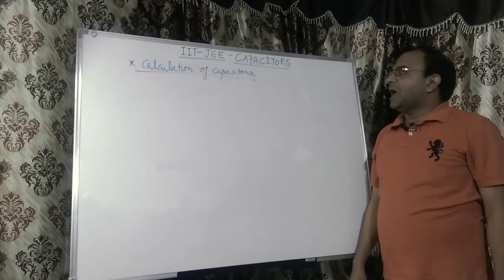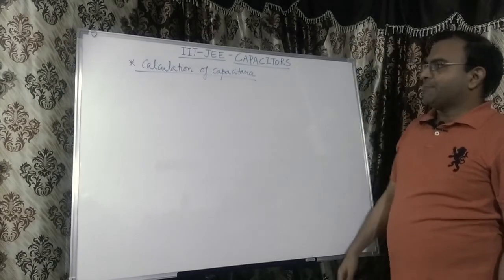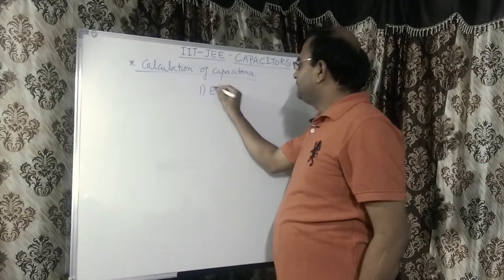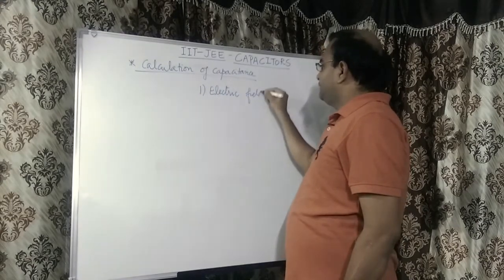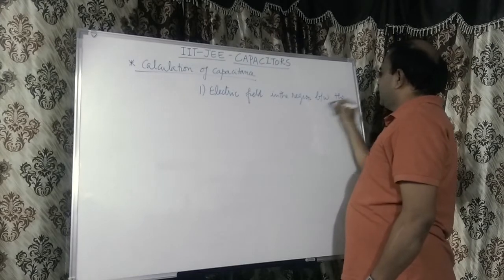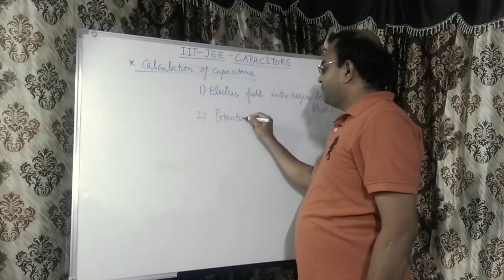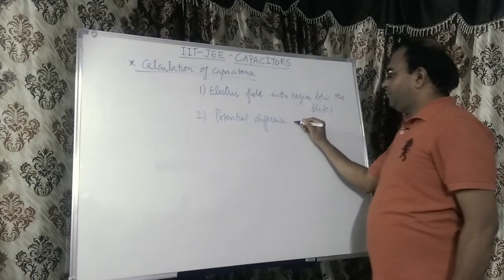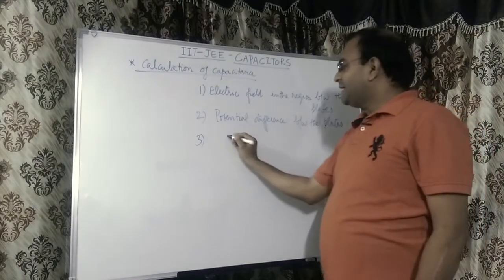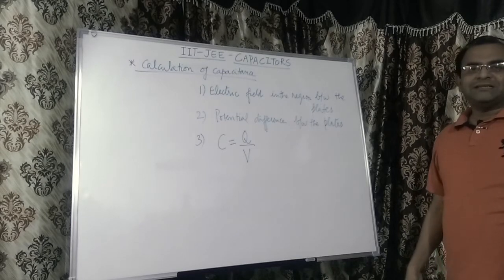The next topic is the calculation of capacitance. Here I will discuss a general procedure for calculating the capacitance of any given capacitor of arbitrary shape. The procedure is: first, establish the electric field in the region between the plates; then calculate the potential difference between the plates; and then from the potential difference, calculate the capacitance using C equals Q over V.